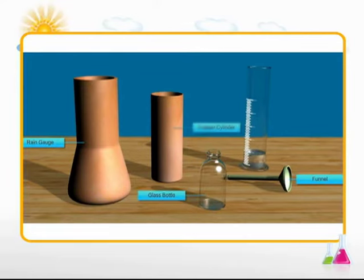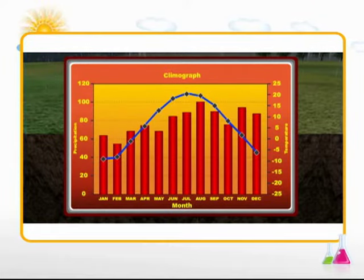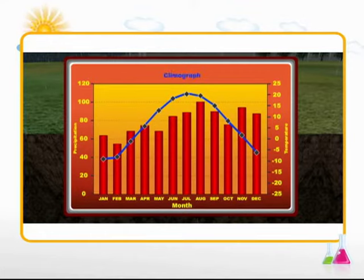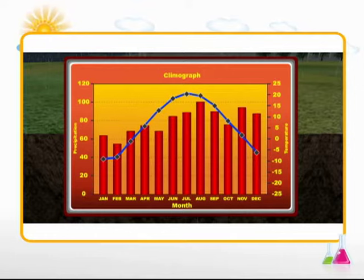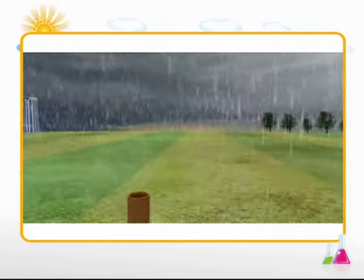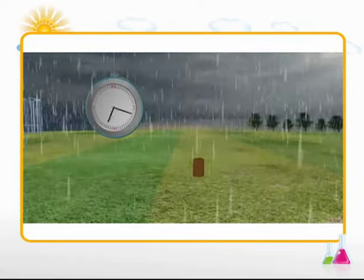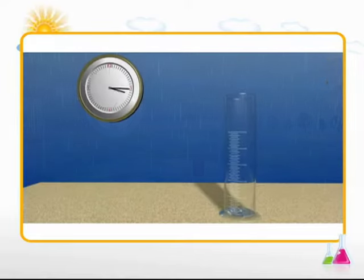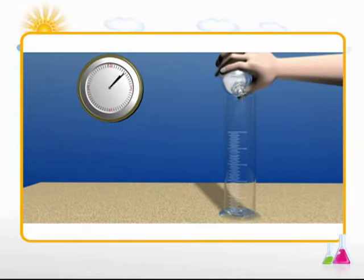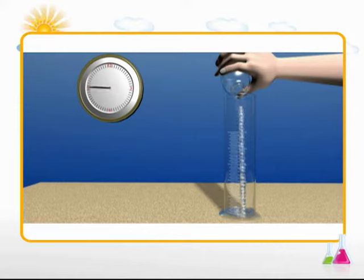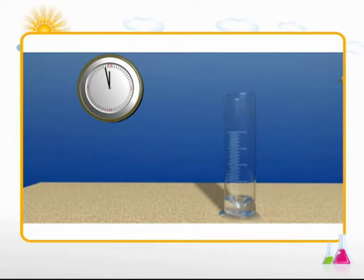Rainfall is measured using an instrument known as a rain gauge. A rain gauge consists of a funnel, a glass bottle, a copper cylinder, and a measuring cylinder. The readings from the rain gauge are depicted in a graph in the form of vertical columns — these graphs are known as climographs, which show the mean monthly temperature and the monthly rainfall received in a place over a year. Daily rainfall refers to the total amount of rain that falls over 24 hours, calculated by measuring rainfall collected in the measuring cylinder of the rain gauge.